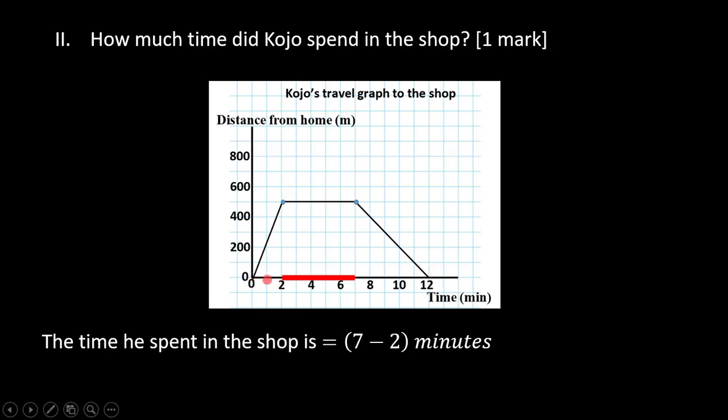Within the first 2 minutes he was walking, so we take that time out of the 7 minutes. We subtract 2 from 7, giving us 5 minutes. So in answer to the question of how much time did Kojo spend in the shop, he spent 5 minutes in the shop.